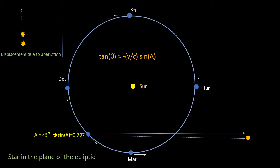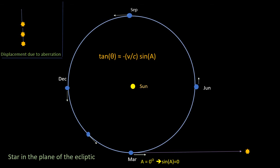The star is displaced a smaller amount from its mean position. Moving forward again to March, the Earth is now moving directly towards the star. So the aberration is now zero and the star isn't displaced at all.